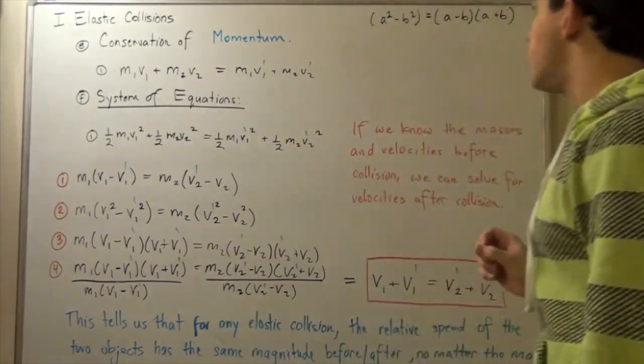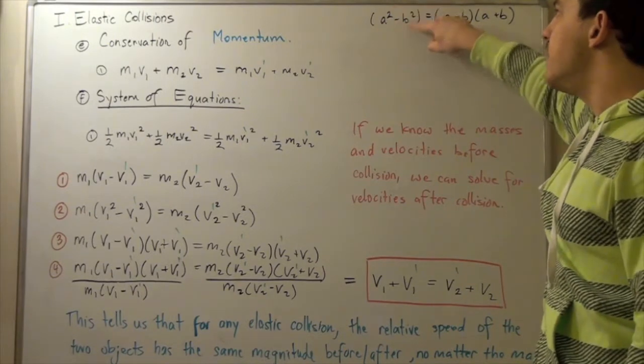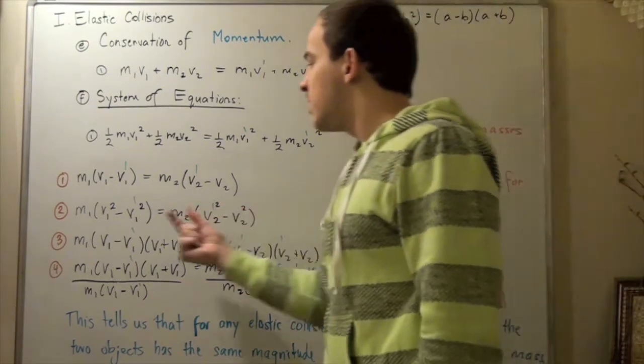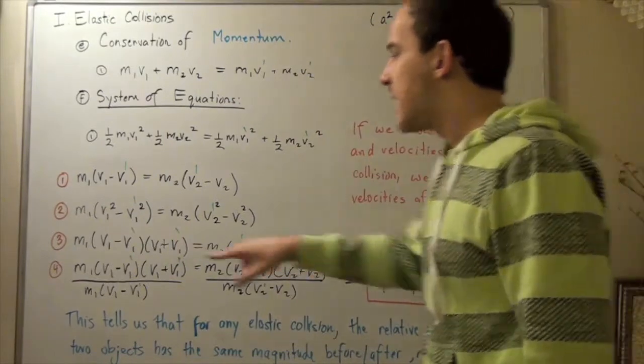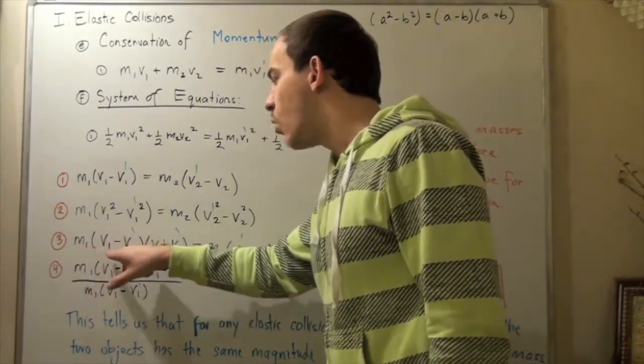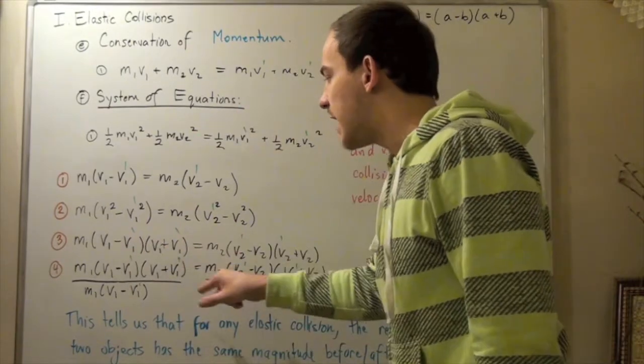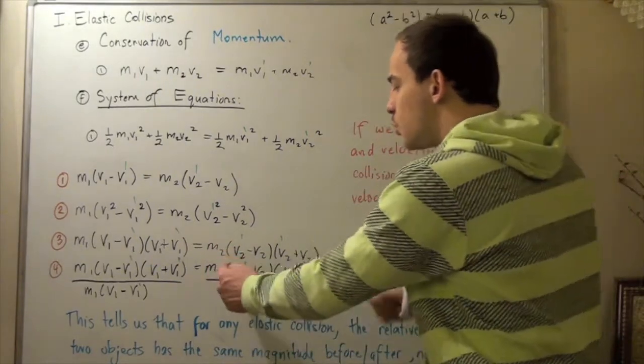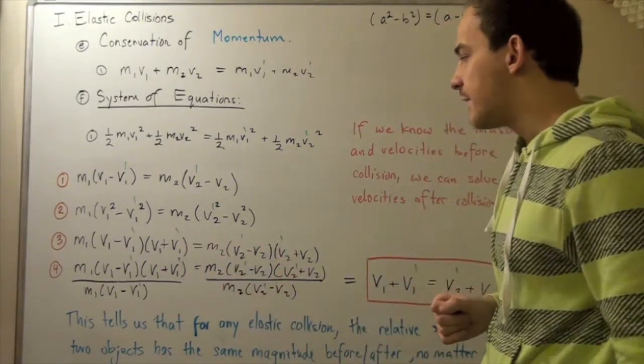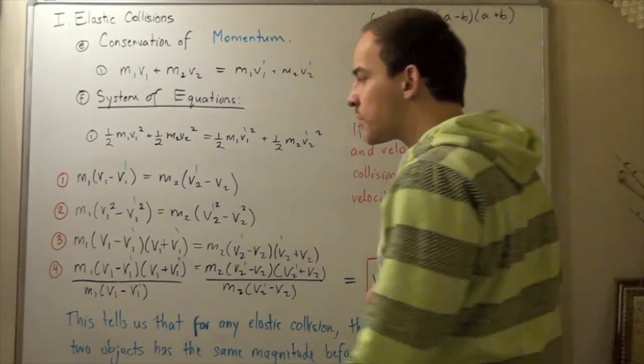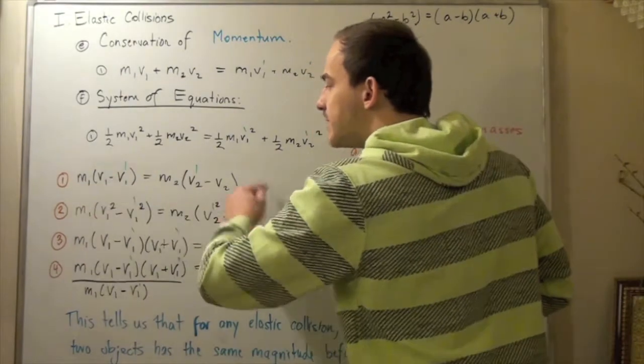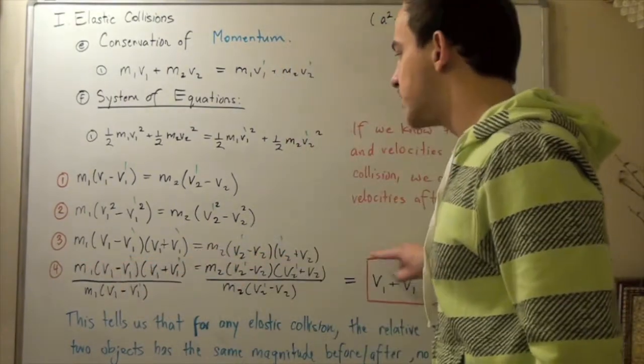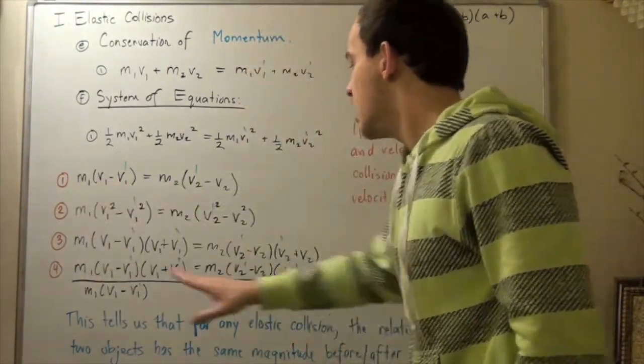Let's recall from algebra that any a² - b² can be rewritten as (a - b)(a + b). That means we can rewrite these two guys in the following way: m₁(v₁ - v₁')(v₁ + v₁') equals m₂(v₂' - v₂)(v₂' + v₂). Now we can take this guy and divide it by this guy. We take this equation and divide, and we get equation 3 divided by equation 1. Notice that the m₁s will cancel and the m₂s will cancel. These terms will cancel and these terms will cancel.